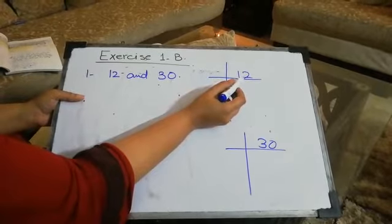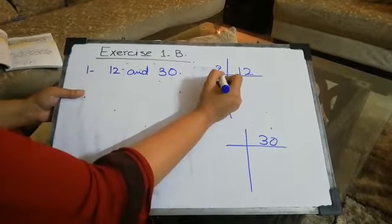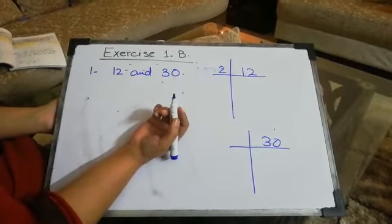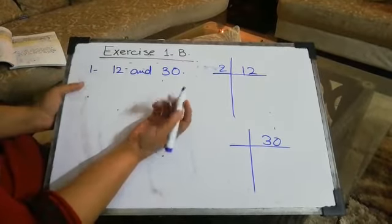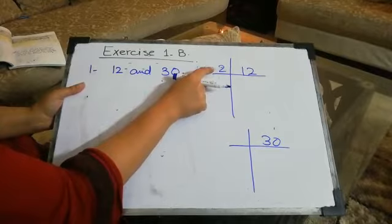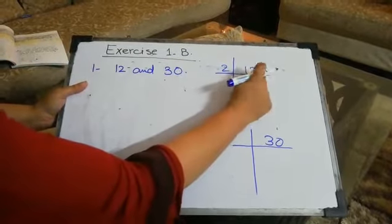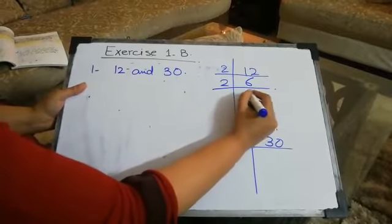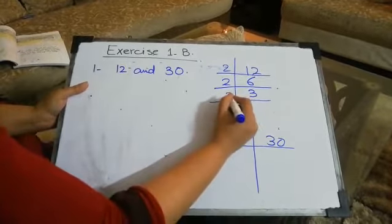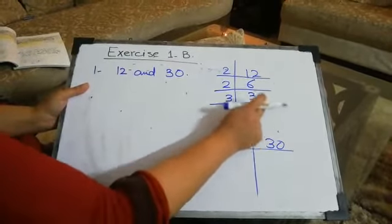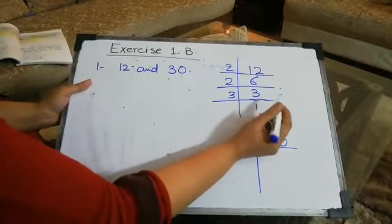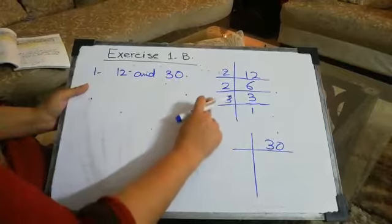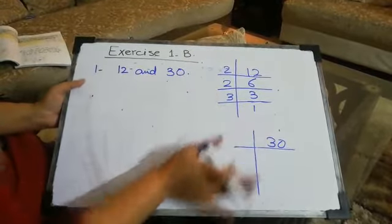First I am going to find the factors for 12. As I told you earlier, we always start from the smallest number. I have started with number 2. So 2 times 6 is 12, then 2 times 3 is 6, and then 3 times 1 is 3. At the end we always need to make it 1, which means we are done with our complete solution for 12.